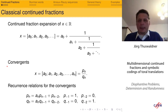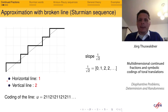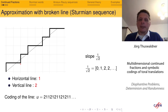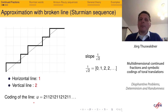Another thing I will need later is Sturmian sequences. Loosely speaking, how do we define them? We take a slope in the plane and code it. Starting at the origin and going in some direction — say up — we always move towards the line we are approximating. This gives us a stepped line. Each time we go vertically we write 2, each time we go horizontally we write 1. This provides a coding of the line by an infinite word over two letters. Here I showed you the slope 1 over √2, and the continued fraction expansion of this will become important.